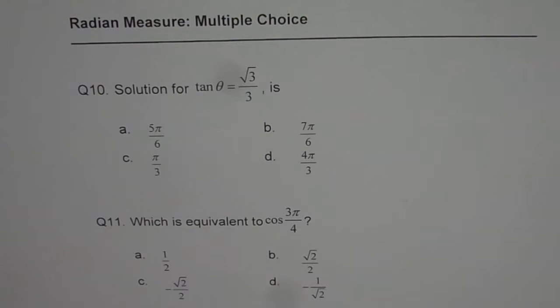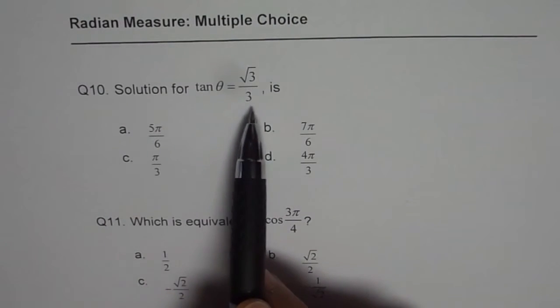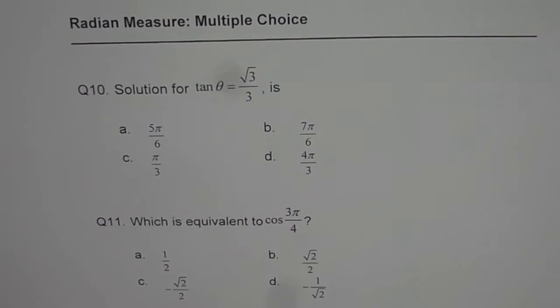Question 10 is: solution for tan θ equals square root 3 over 3. Four choices are given. Question 11 is: which is equivalent to cos of 3π by 4? Half square root 2 over 2, minus square root 2 over 2, or minus 1 over square root 2.